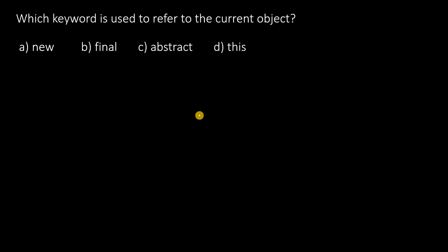Which keyword is used to refer to the current object? The answer is the 'this' keyword. This is a direct question.